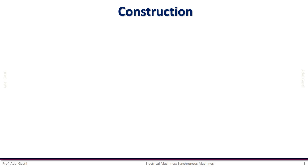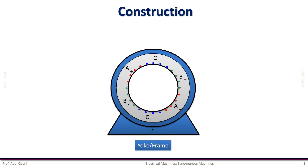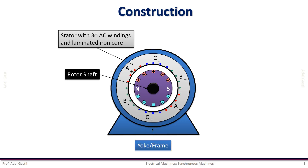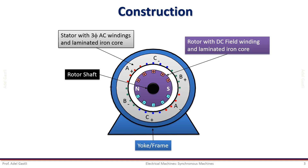A synchronous machine is a doubly excited machine. It consists of a stator and a rotor. Its stator, which holds three-phase AC windings and a laminated magnetic core, is also called the armature, while the rotor hosts a DC winding for generating a constant magnetic field in the rotor.